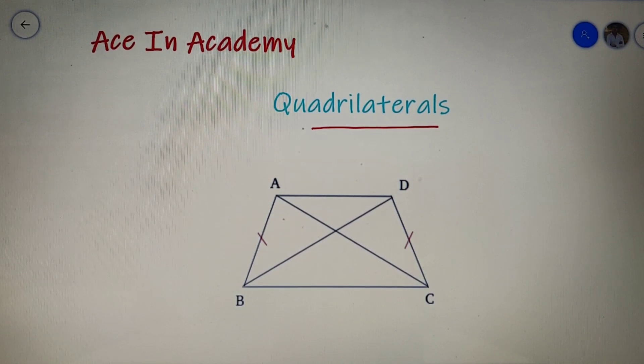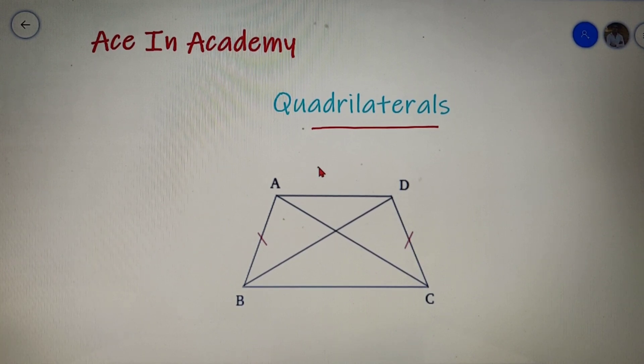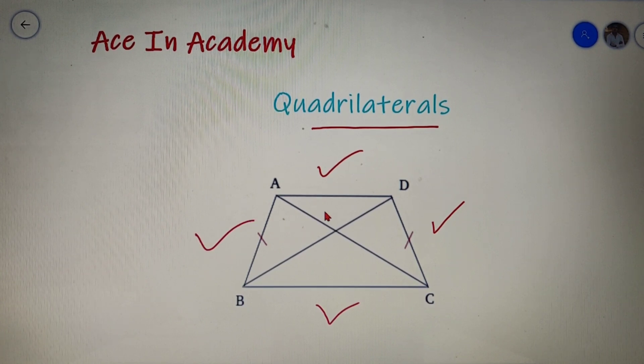By the definition of the quadrilateral we can say that a quadrilateral is formed by four sides AD, DC, BC and AB and we can clearly see that it has four angles: angle A, angle B, angle C and angle D.